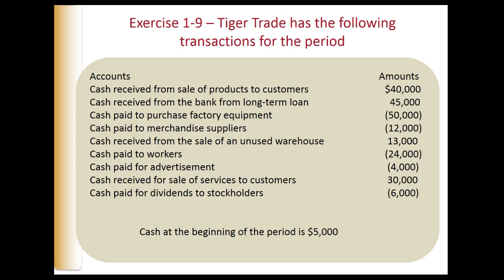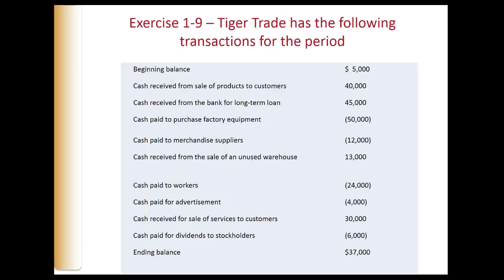Calculate the ending balance of cash, assuming the balance of cash at the beginning of the period is $5,000. So we know it starts with $5,000 — that's our beginning balance. Then we're going to add the cash received and subtract the cash that was paid out.